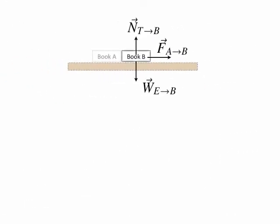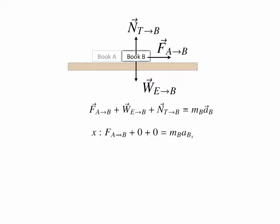For book B, which has three forces acting on it, we write Newton's second law in vector form: the force of book A on book B, the force of the earth on book B, and the force of the table on book B, summed and set equal to m_B times a_B. Breaking that into x and y components: in x, the weight and normal force are vertical so they have no x component — only the force of book A on book B contributes. In y, there is no acceleration, and the force of book A on book B has no y component; only the normal force and the weight of book B appear.